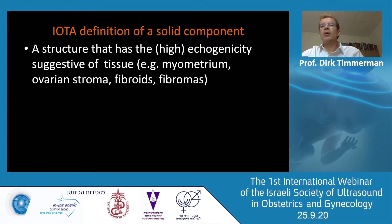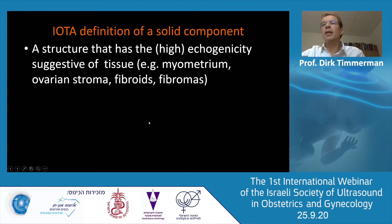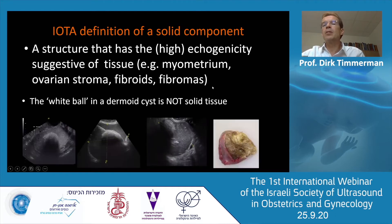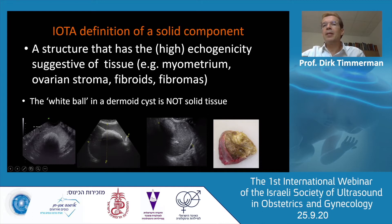That paper in the White Journal is freely available and will explain every structure you will see. A solid component is a structure that has high echogenicity suggestive of tissue, like myometrium or stroma, as you see in fibroids and fibromas. But a white ball in dermoid cysts is not solid tissue — that's very important, and that's arbitrary, an agreement. That's why you need to come to a consensus to say this is not a solid component. We know that it consists of hair, sebum, maybe cartilage or bone, but it's not regarded as solid tissue.